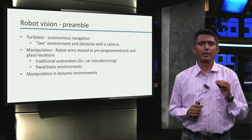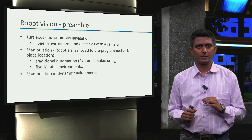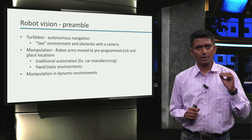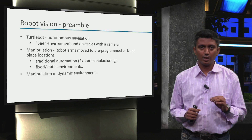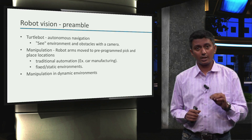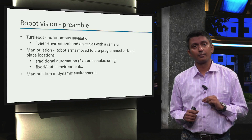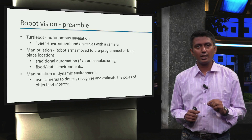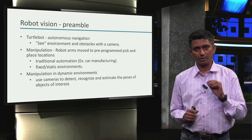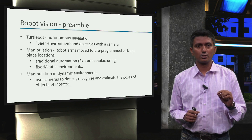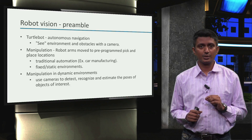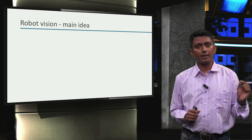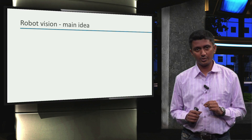But manipulation in dynamic environments is different. There is no guarantee that an object to be manipulated will be exactly in the same location all the time. In such scenarios, we will need a camera to detect, recognize, and also estimate the pose of the object we want to manipulate. And that's the main idea of robot vision.